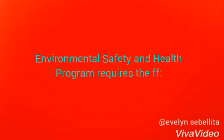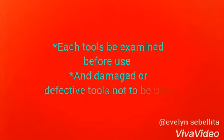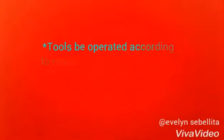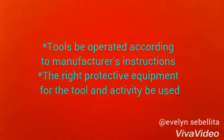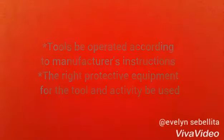Environmental safety and health program requires the following: all tools be kept in good condition with regular maintenance; the right tool be used for the job; each tool be examined before use and damaged or defective tools not to be used; tools be operated according to manufacturer's instructions; and the right protective equipment for the tools and activity to be used.